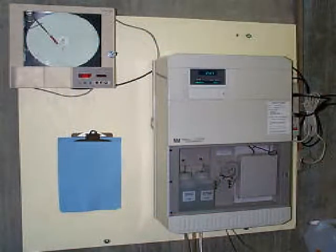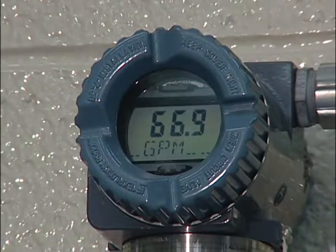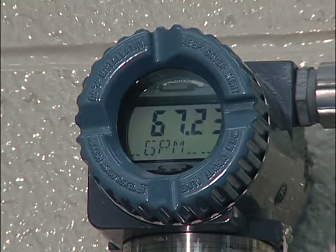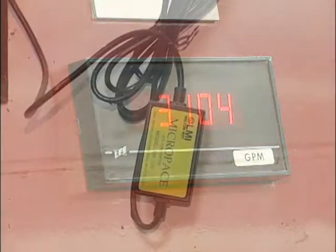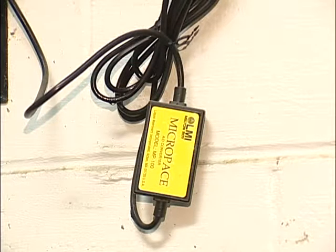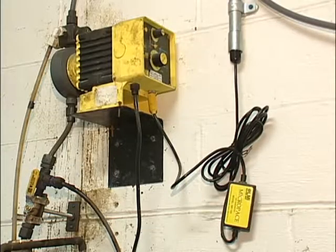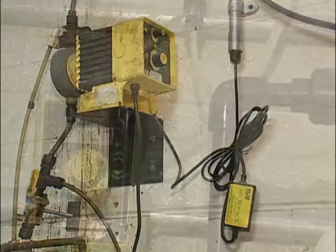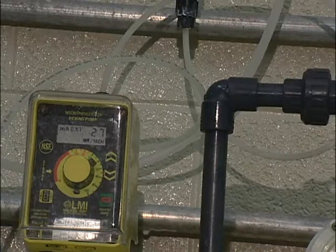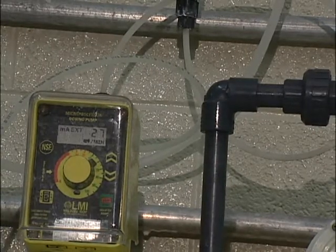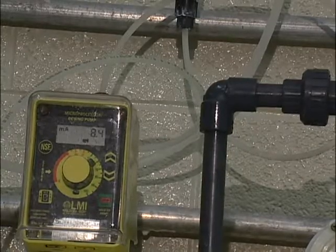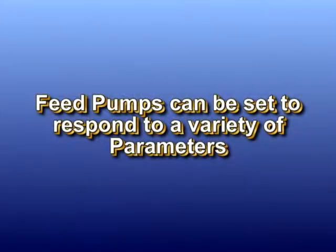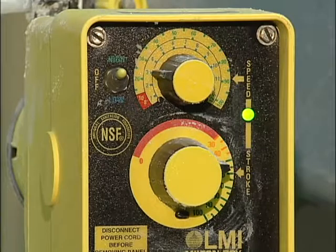Some pumps are set to pump a fixed amount whenever they are in operation; others can be set to respond to varying input signals to yield differing amounts in response to changing conditions. For example, pumps can be flow-paced so they vary delivery rates with changing flow rates. A sensing unit picks up the rate of flow and sends a corresponding signal to the chemical feed pump, delivering more chemical for higher flows and less for lower flow conditions.